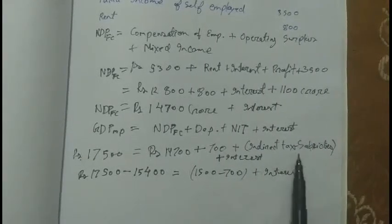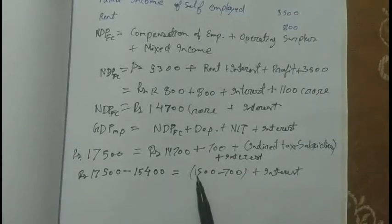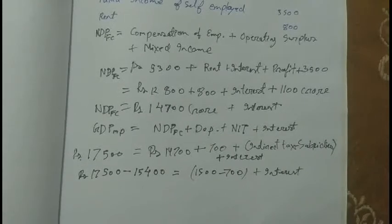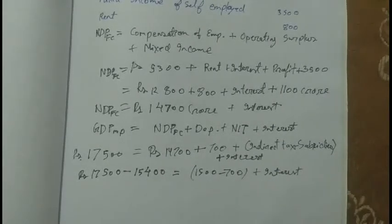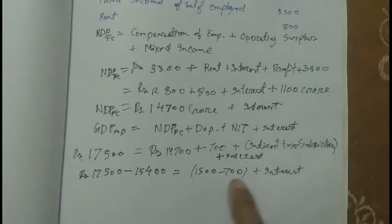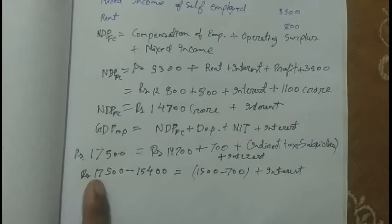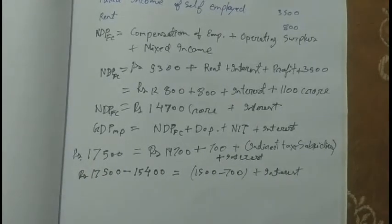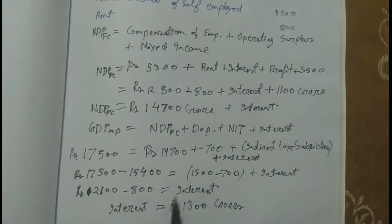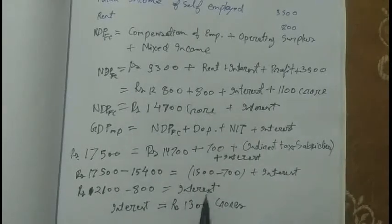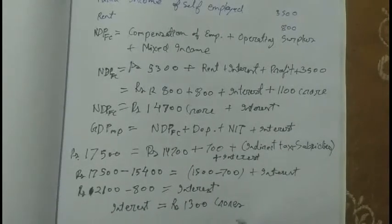Plus interest. Now indirect tax minus subsidy equals 800. When we move 800 and depreciation (NIT total = 800) to the other side, they are subtracted, and the remaining value is interest. 2100 minus 800 equals 1300, so interest equals Rs. 1300 crores — that is our answer.